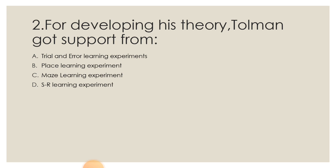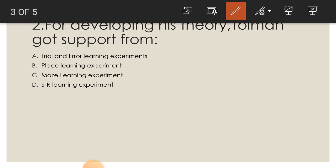So the next question is, for developing his theory Tolman got support from: A: trial and error learning experiments, B: place learning experiment, C: maze learning experiment, D: SR learning experiment. So what is the correct answer? The correct answer is place learning experiment.